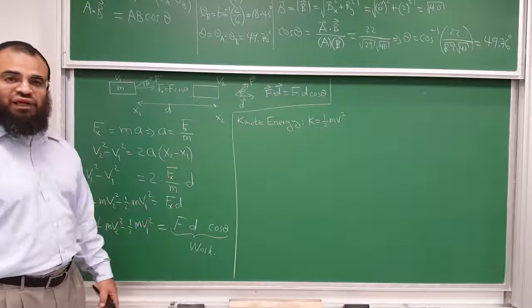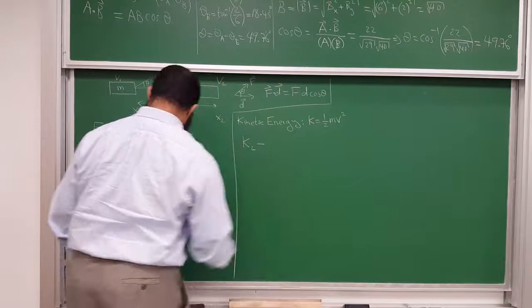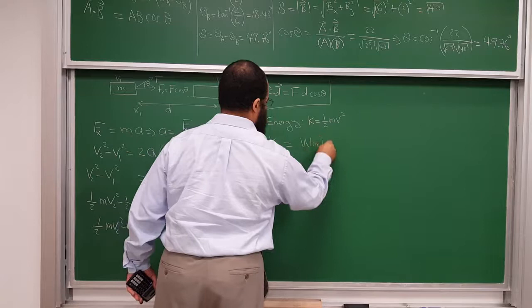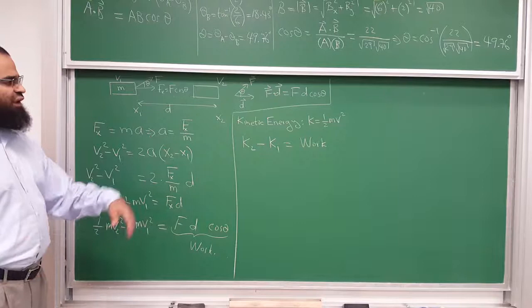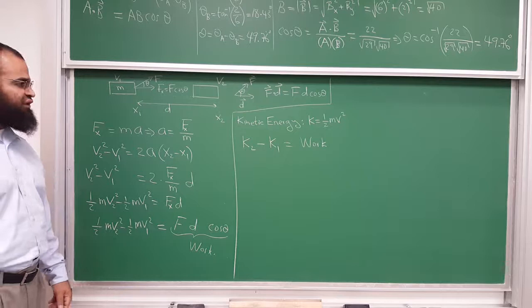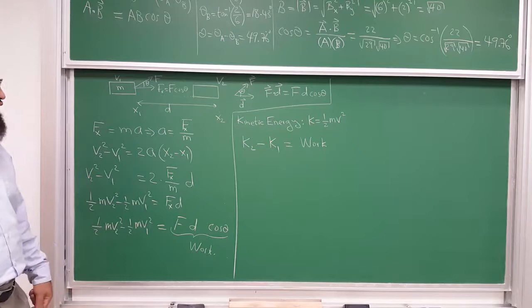So we get K2 minus K1 equals the work done. This is called the work-energy principle, and we will see that it's more general than this. We derived it for a constant force, but it works even for variable forces — even when the force is changing, the work done on an object still equals the change in kinetic energy of that object.